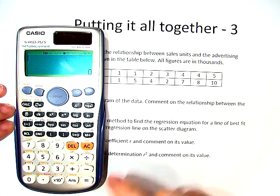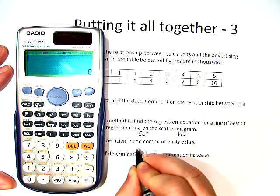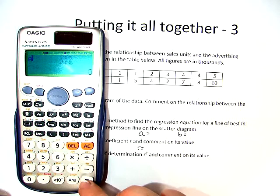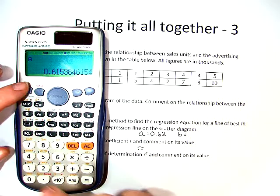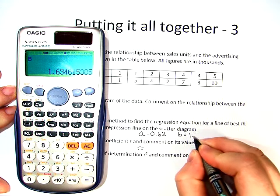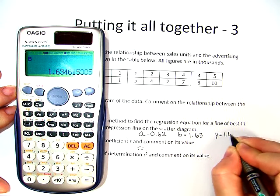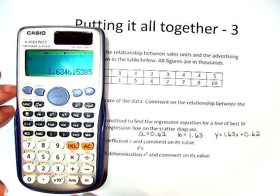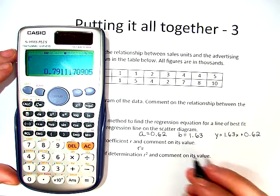So we are going to go ahead and start by finding a, then b, and then we'll do r. So shift 1, we go to regression and find a. We found a to be 0.62. Okay, now let's do b. We found b to be 1.63. So our equation is y equals 1.63x plus 0.62.